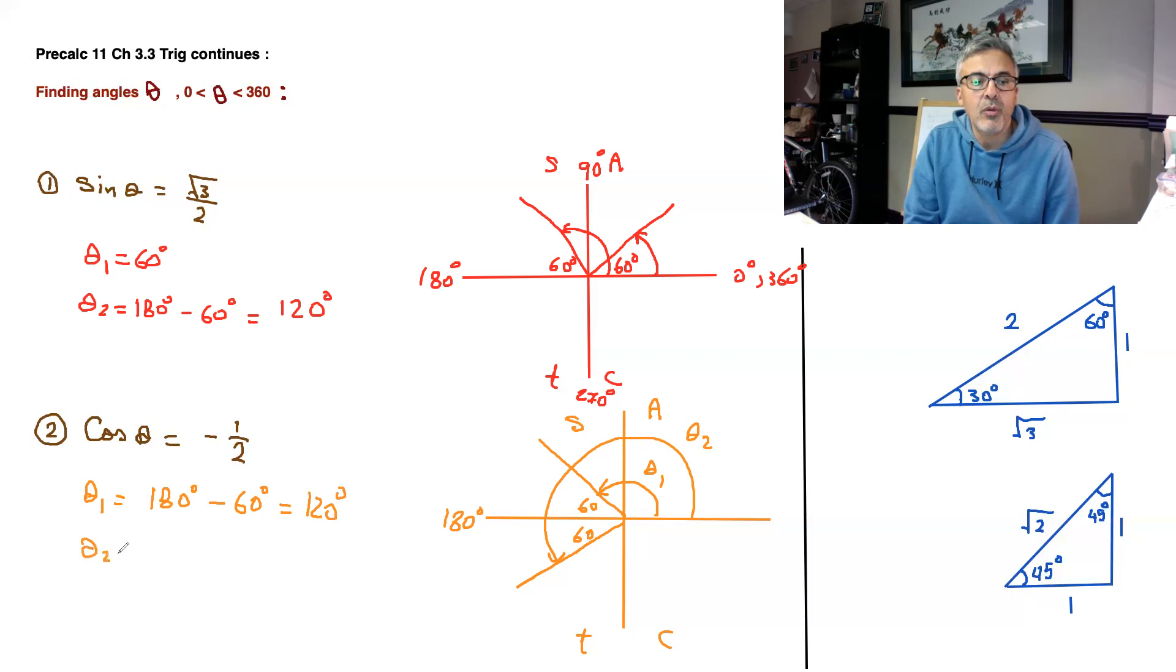So theta 2 will equal, you'll go all the way to 180, and then go more 60, so that means you go 180 degrees plus 60 degrees, and that gives you 240.